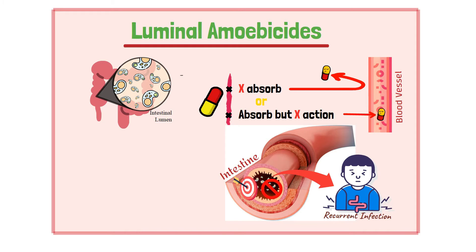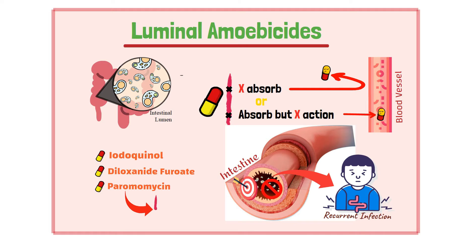Luminal amoebicides are effective in this case. These agents include iodoquinol, diloxanide furoate, and paromomycin. Paromomycin is an aminoglycoside antibiotic that does not absorb into the blood and is considered the most effective in this class. Iodoquinol and paromomycin are used in the US while diloxanide furoate is used in other countries.